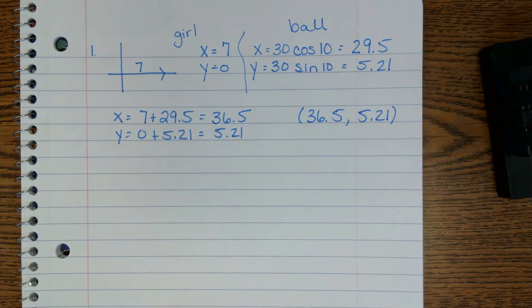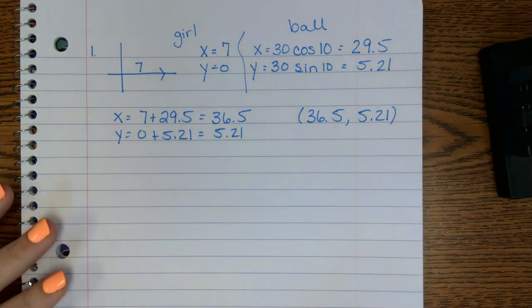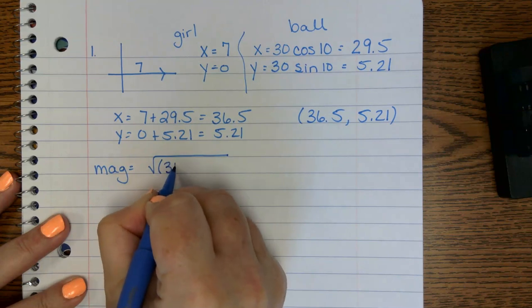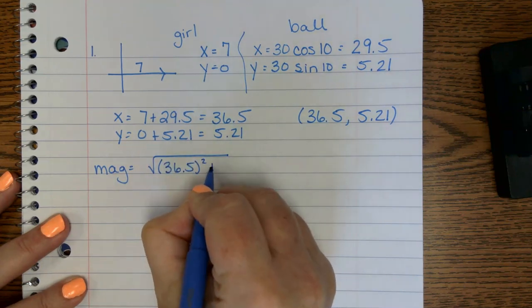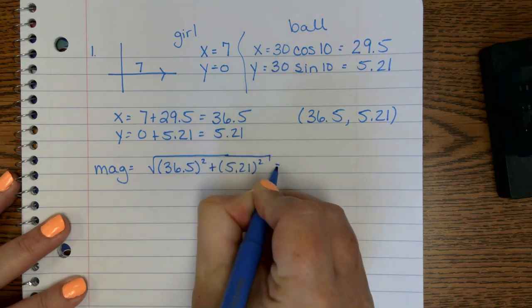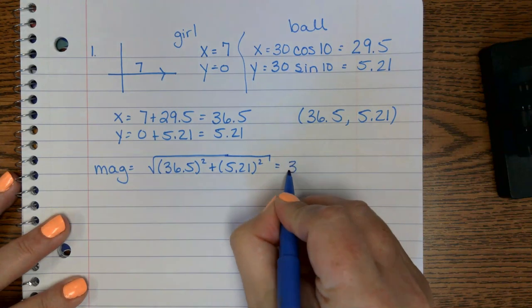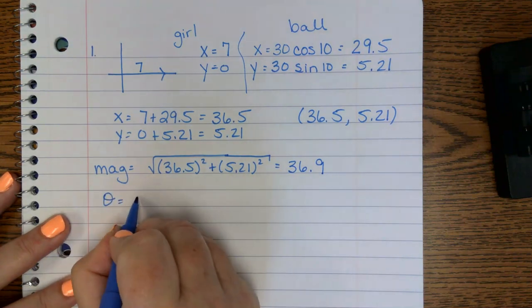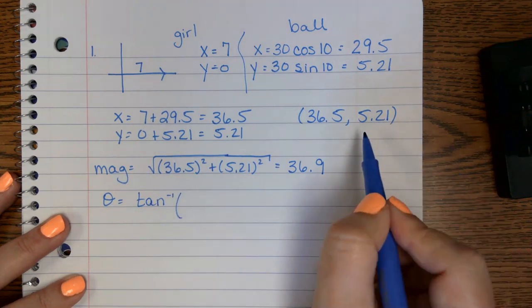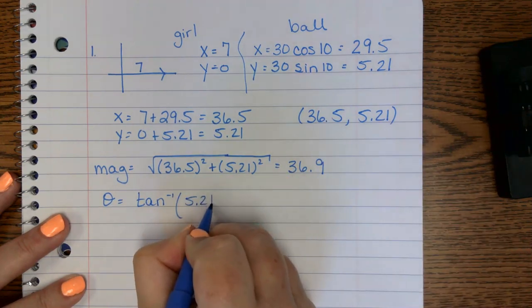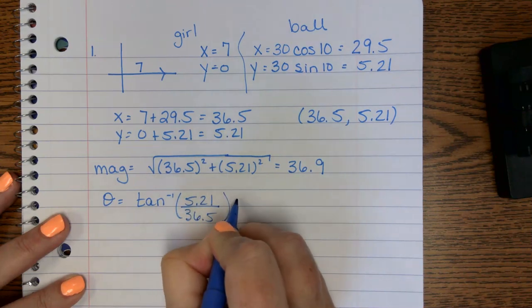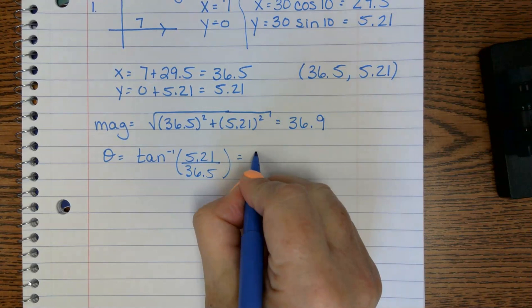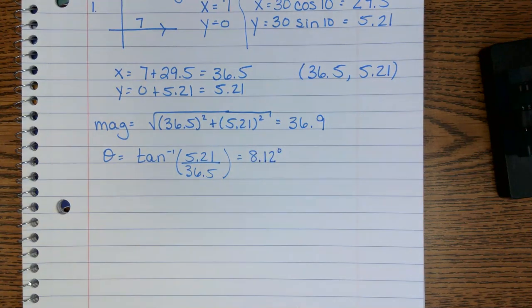So the question is, what is the resultant speed in the direction of the kick? So what we're going to do is we've got to find the magnitude. So 36.5 squared plus 5.21 squared. You're going to put this in the calculator and you're going to get roughly 36.9. Now we've got to find our direction, our angle. So inverse tangent, just like before, y over x, so 5.21 over 36.5. Now because we're in quadrant 1, we don't have to add anything into here. And we get 8.12 degrees.